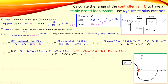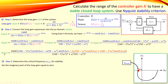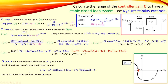To find omega critical for stability, we set the imaginary part of the loop transfer function to zero. This is a somewhat complicated expression, but solving it and taking the smallest value of omega gives ω_critical = 4.8 radians per second. This critical frequency will be used in the further steps.